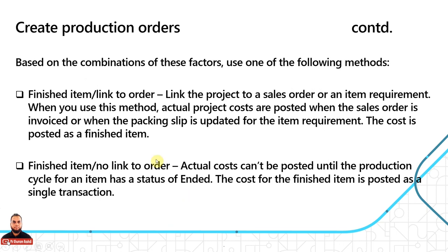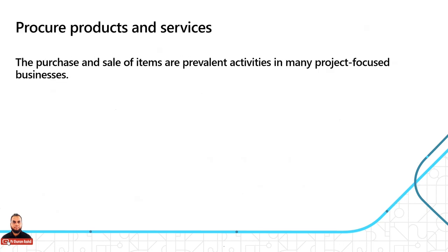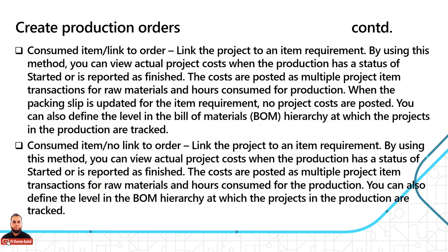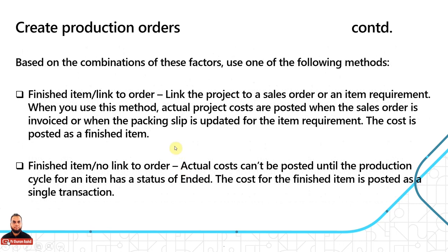Production orders are based on four factors: finish item with link to order, finish item with no link to order, consumed item with link to order, and consumed item with no link to order. In the finish item with link method, project costs are posted when the sales order is invoiced or when the packing slip is updated for the item requirement. In finish item with no link, costs cannot be posted until the production cycle has a status of 'ended,' and posting occurs as a single transaction.